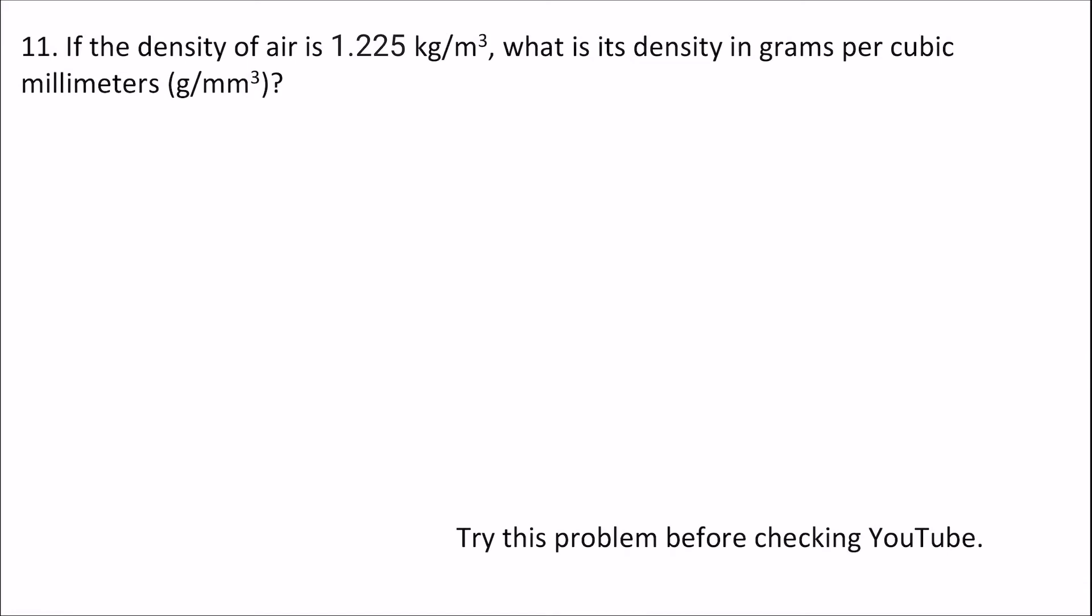This is another difficult conversion. It starts off with giving us the density of air, which is 1.225 kilograms per cubic meter, and it wants us to find the density in grams per cubic millimeter.